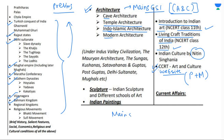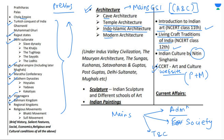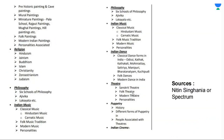If you are preparing for mains GS Paper 1, remember you only need to focus on a few points for these empires: administration, society — for example, in the Chola Empire, was society free for women? — and trade and commerce. That's it. Do not go deep into it. If you have history optional, then go deep; otherwise, keep it limited.